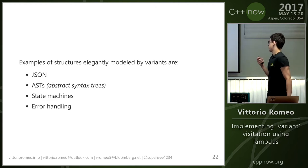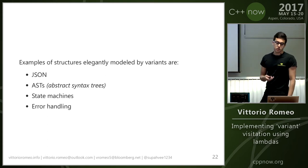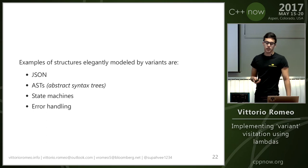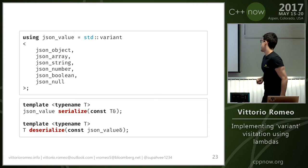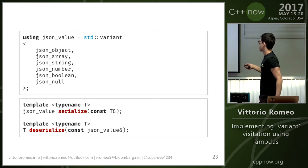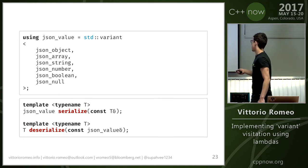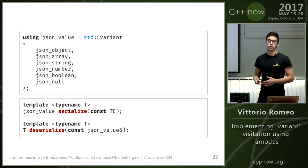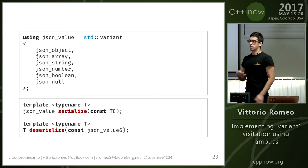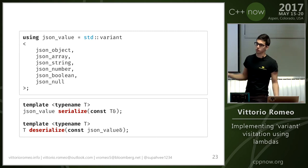Defining a variant type is trivial — just list the types you want inside your variant. Visitation allows easy access to the current active alternative without going through any union, and visitors are checked to be exhaustive. There are a lot of structures elegantly modeled by variants: JSON, ASTs, state machines, and error handling. JSON is a discriminated union between an object, array, string, number, boolean, and null — a perfect example. For serialization, you just take the value which is the variant and do some visitation which recurses to correctly produce the JSON string.